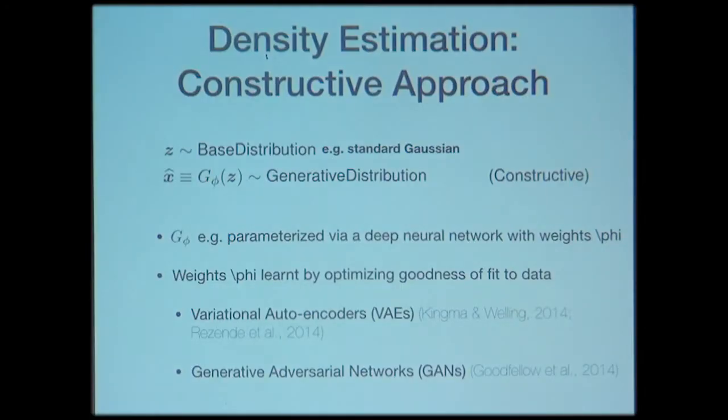Regarding autoencoders: autoencoders are what I call a constructive approach. In autoencoders, you go from the Gaussian to the data distribution, but you also have an inference network — a network that goes from the data to the uninformative base — and you fit both simultaneously.